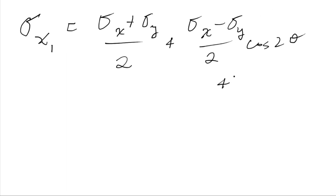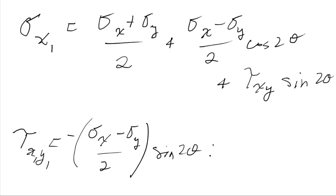I'd encourage you to look through my notes for additional details about how these are derived. The result is that sigma x1 equals sigma x plus sigma y over 2 plus sigma x minus sigma y over 2 cosine of 2 theta plus tau xy sine of 2 theta, and tau x1 y1 is minus sigma x minus sigma y over 2 sine of 2 theta plus tau xy cosine of 2 theta.